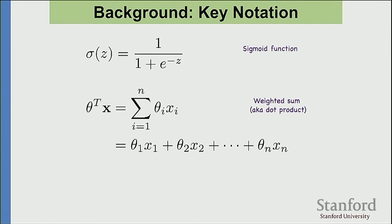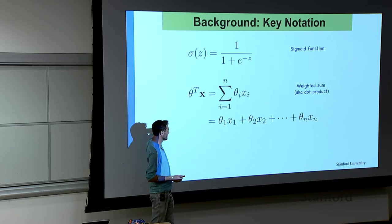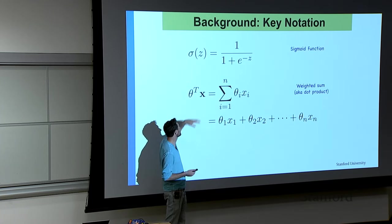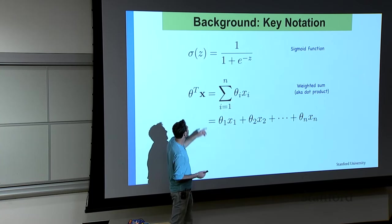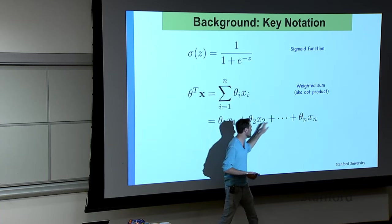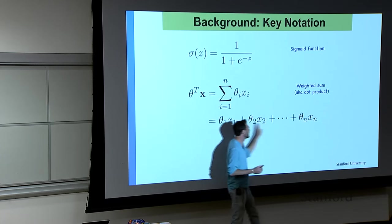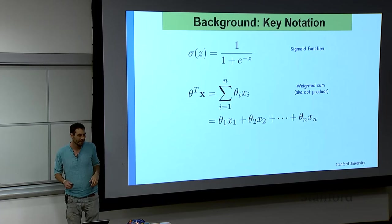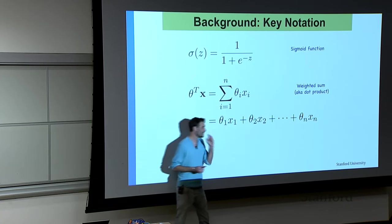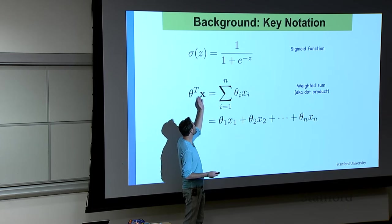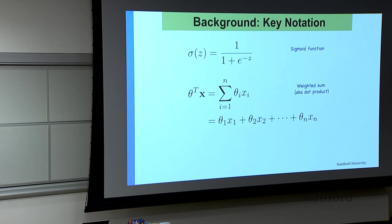Another thing worth recalling before we jump in is some key notation you've probably seen in Math 51: the transpose of two vectors. If theta is a vector and x is a vector of the same length, theta transpose x is another way of writing the sum: take the first element of both vectors, multiply them together, then add that to the product of the second elements, and so on through the nth element. It's an element-wise product and then a sum over all elements. You'll notice I index starting at zero, not one, which you'll see when we get there. Any questions on this notation?